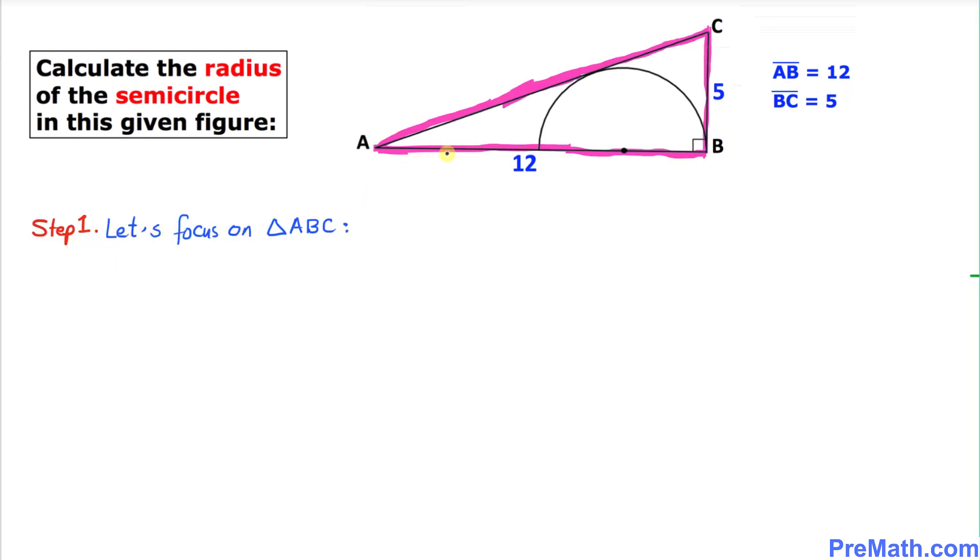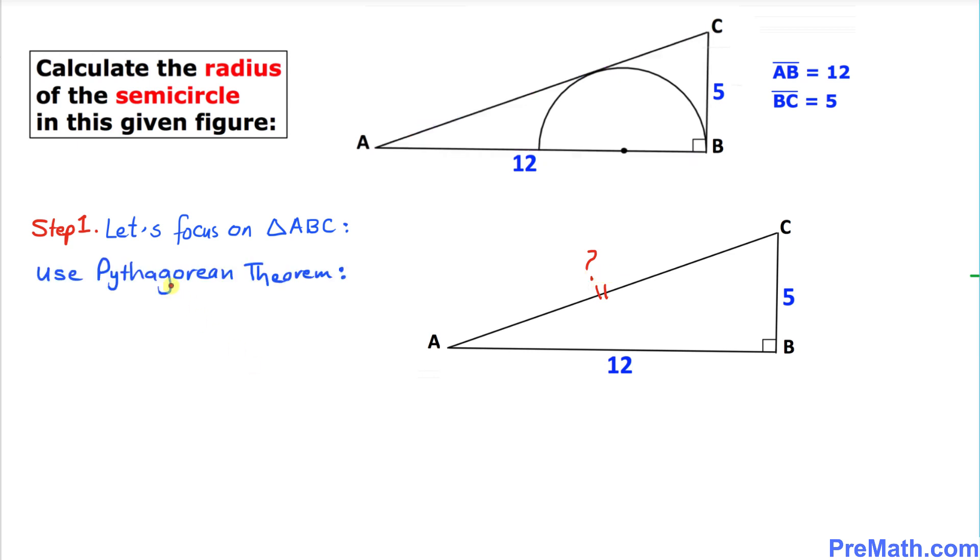Here I copy down that right triangle ABC. In this right triangle we are going to figure out the length of this side AC. For that purpose we are going to use the Pythagorean theorem.